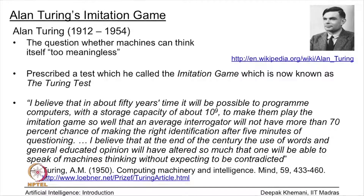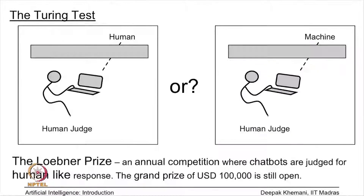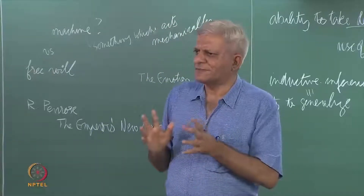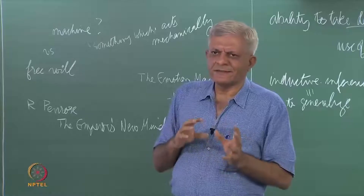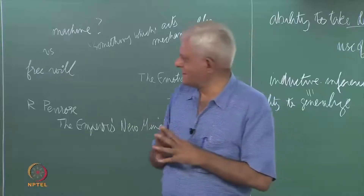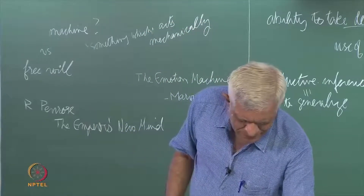The Turing test works like this: there is a human judge who, via a teletype — or in the current day, a mobile phone chat — is communicating with someone on the other side of a wall. The judge does not know whether it is a machine or a human being. Turing said that if 70 percent of the time the machine can fool the judge into thinking it is talking to a human being, then the machine is intelligent.